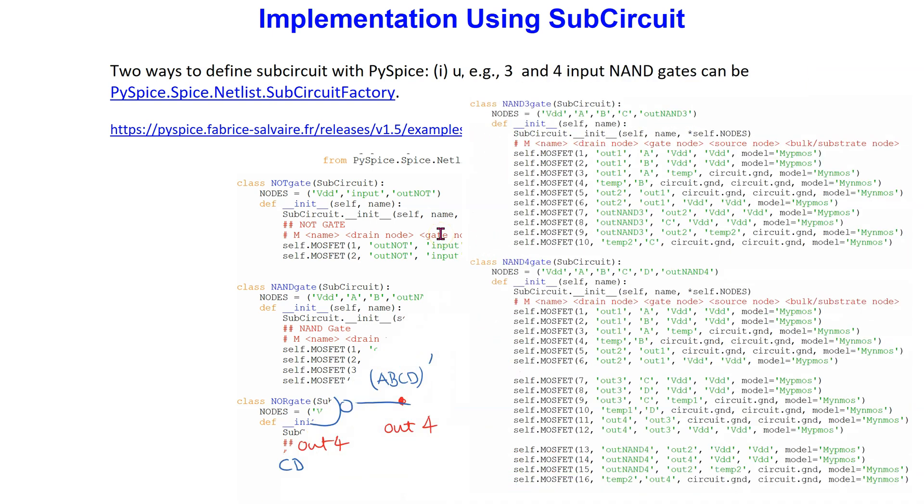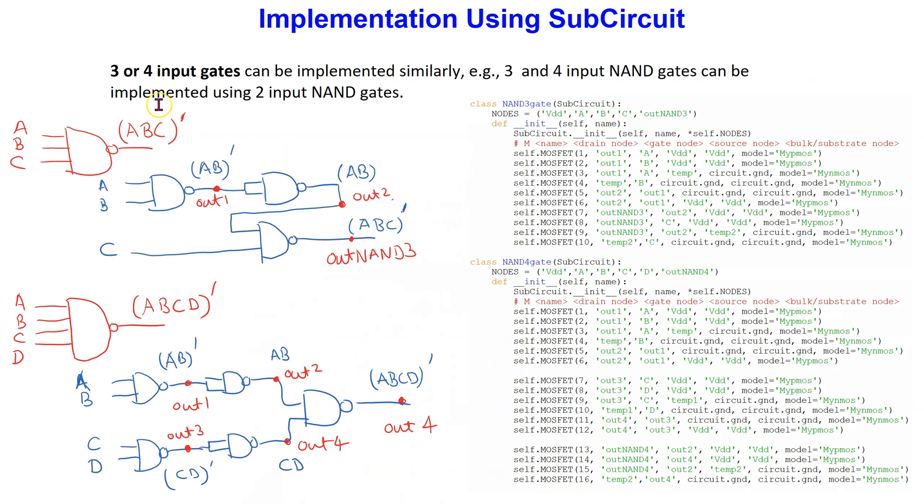When implementing combinational logic circuits, often three or four input gates are required. These can be implemented using two input gates. For instance,